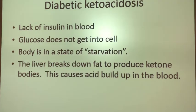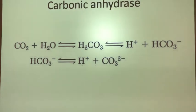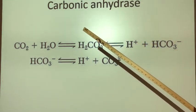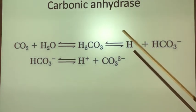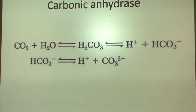This brings up the Henderson-Hasselbalch equation. The enzyme carbonic anhydrase is relevant here — if you have an excess of acid in the blood, this enzyme can convert that into CO2. If you have too much acid in your blood, you can increase your respiratory rate and exhale that CO2. So this patient comes in breathing very fast — hyperventilating. That's one of the clues to diabetic ketoacidosis.